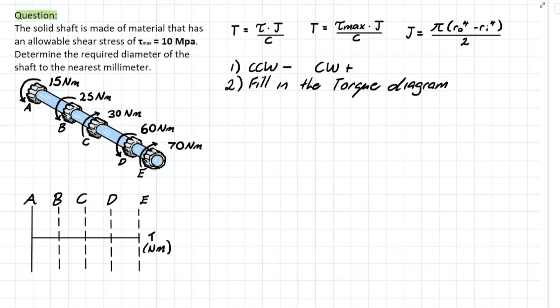We can fill in this table based on our convention. If you look at point A, this is going in a counterclockwise direction. So we're going to have a line that looks something like this and we're going to have 15. Similarly, we have another one here and these are simply additive. So we're going to have 15 plus 25 and that's going to give us 40.